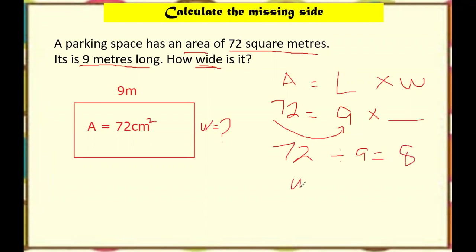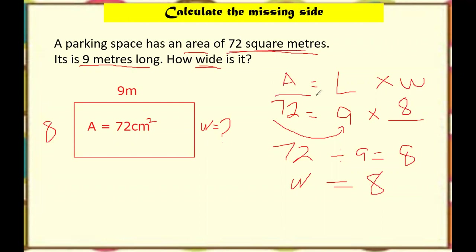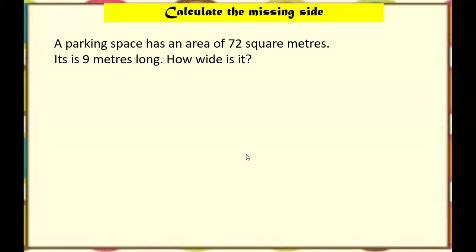Therefore the width is 8. So now, nine times eight equals 72 — confirmed. Make sure that when you are solving a problem, it is better to draw an illustration or diagram and then write down the given numbers following your formula.